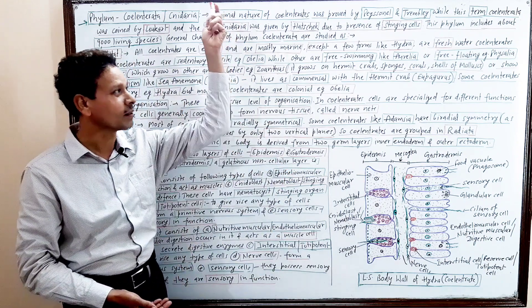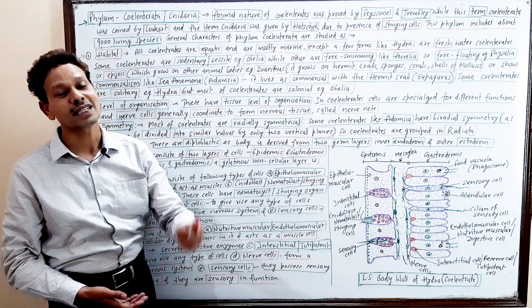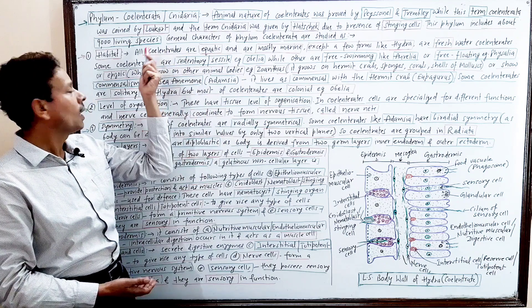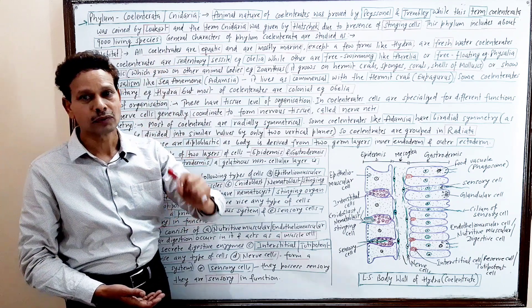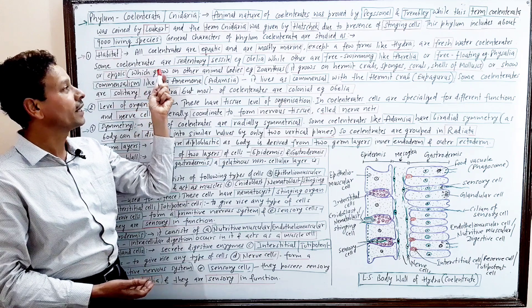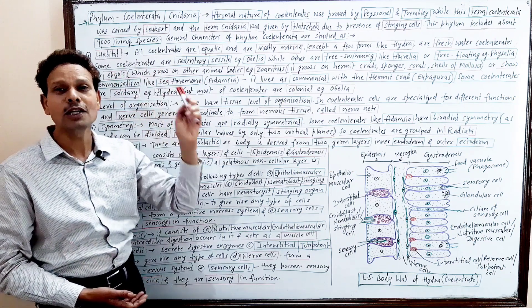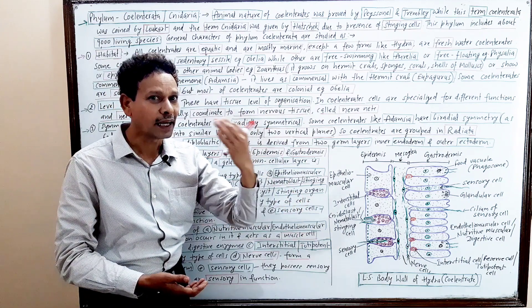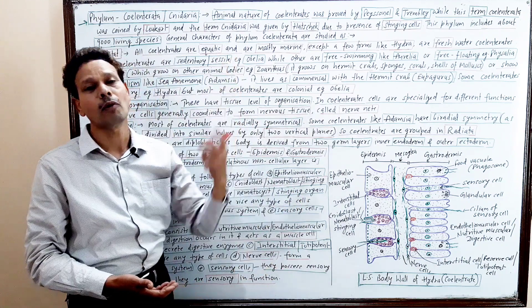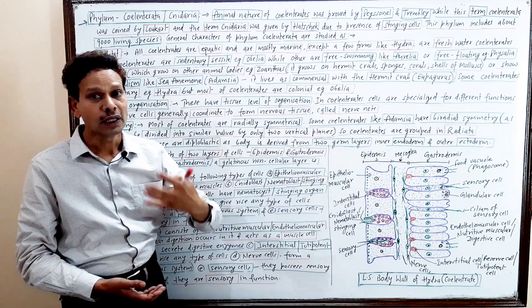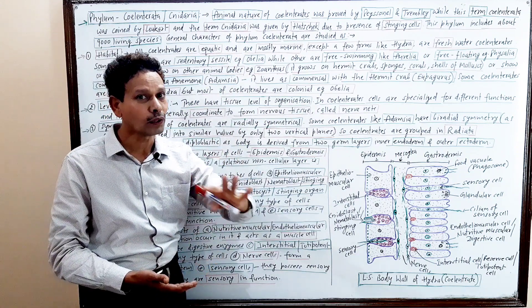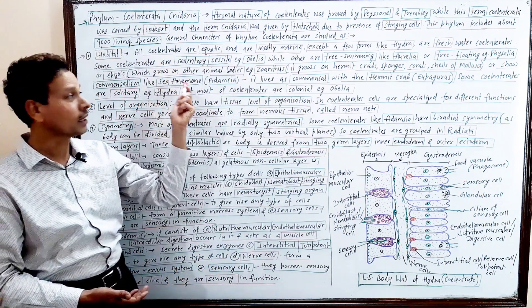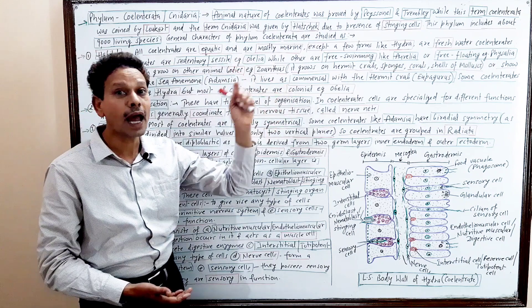We study colonial forms such as Obelia. An important point for competition students: some coelenterates are epizoic, meaning these coelenterates grow on the body surface of other animals. For example, Xenthus is epizoic, growing on the body surface of other animals like hermit crabs, sponges, corals, and shells of mollusks.